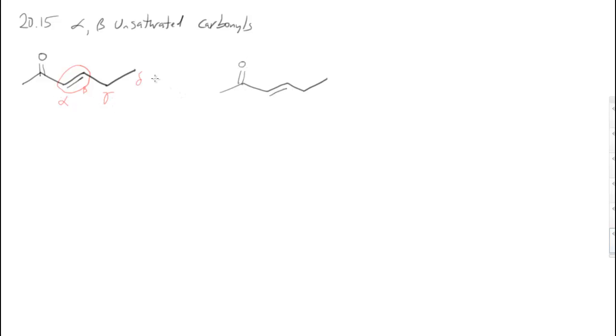And the reason has to do with the hybridization of each of these orbitals. So oxygen here is sp2 hybridized with the p orbital. This carbonyl carbon is sp2 hybridized with the p orbital. This alkene carbon here is sp2 hybridized with the p orbital. And this one here is also sp2 hybridized with the p orbital. So because of that, there's a resonance structure that we can draw.